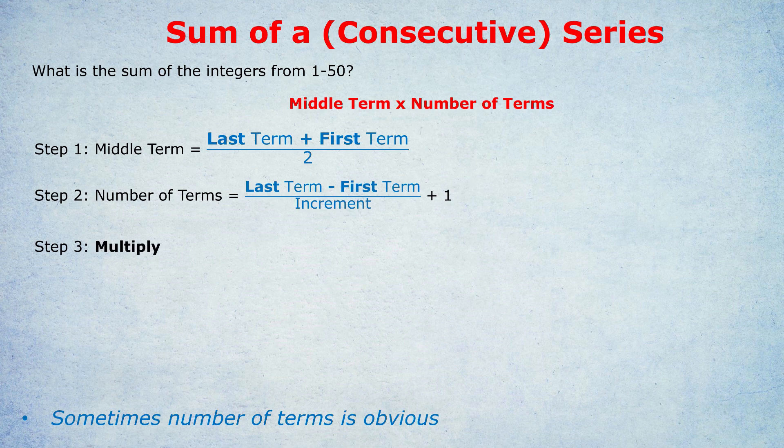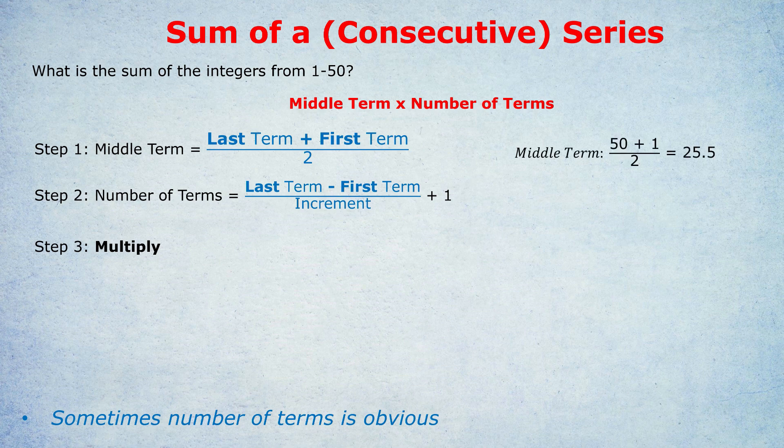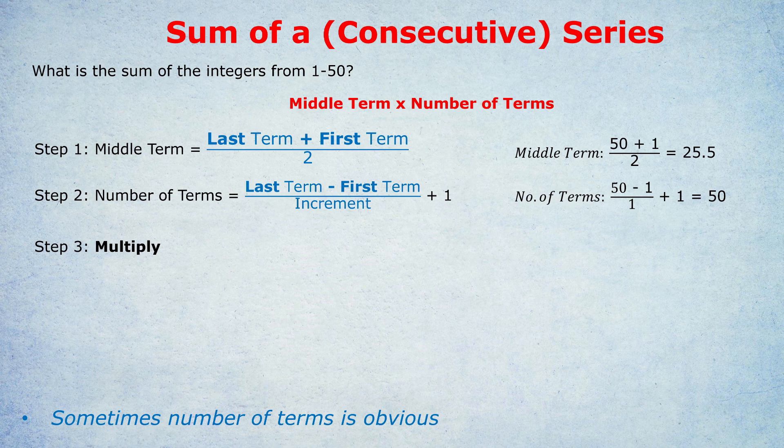So let's apply that quickly to this question. The last term is 50. The first term is 1. So 50 plus 1 divided by 2, as we saw earlier, is 25.5. The number of terms, or the last term is 50. The first term is 1. So 50 minus 1, which is 49. 49 divided by 1 is 49. 49 plus 1 is 50.